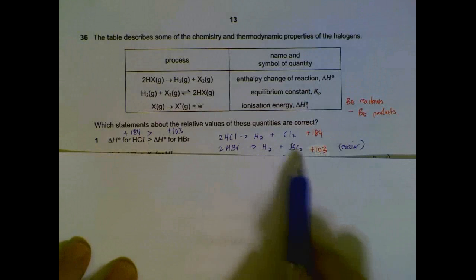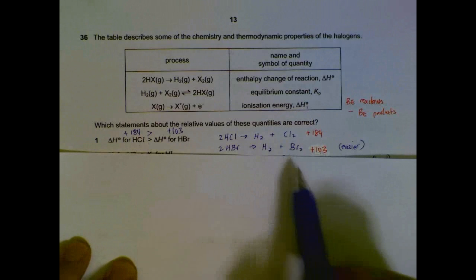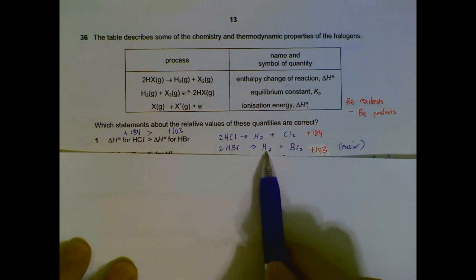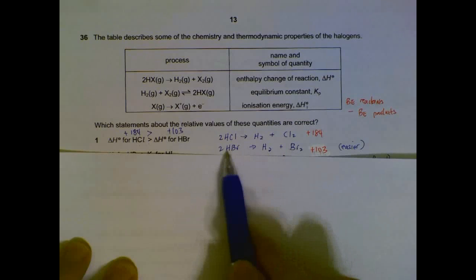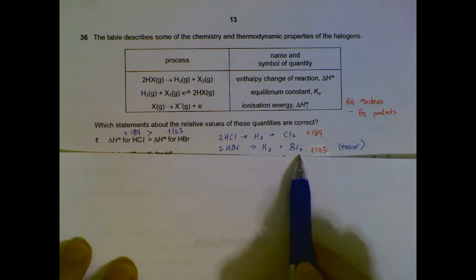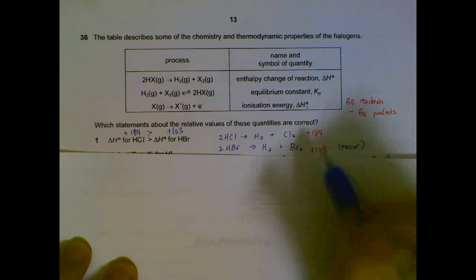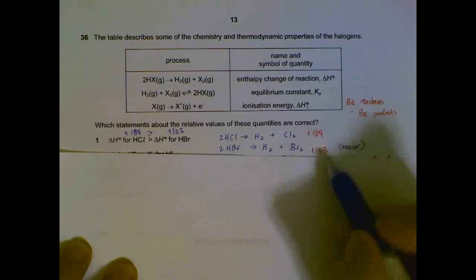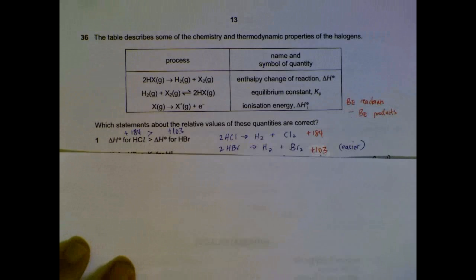If you don't want to refer to data booklet, if you know your concepts, you should understand that it is easier for HBr to decompose back to H2 and Br2. So if it is easier, this will actually be less endothermic or more exothermic. But sometimes that can be confusing. You can put in numbers if you want.